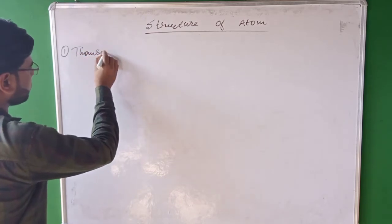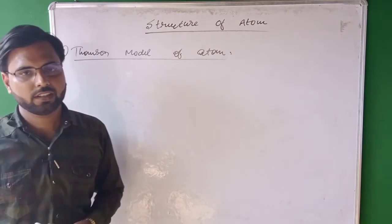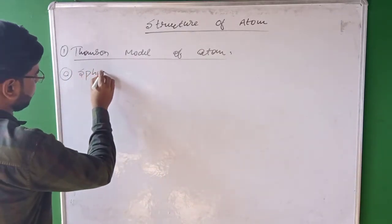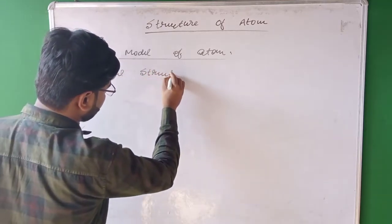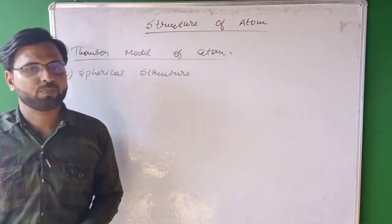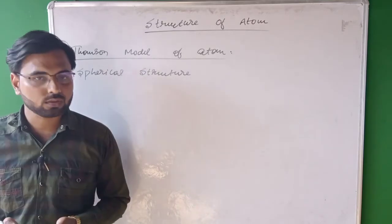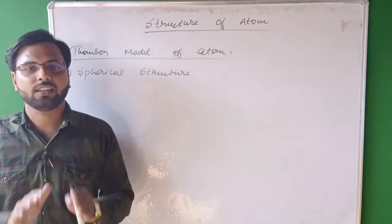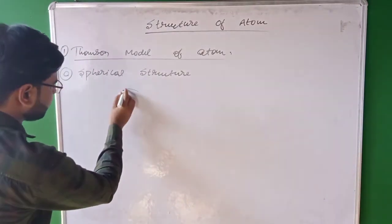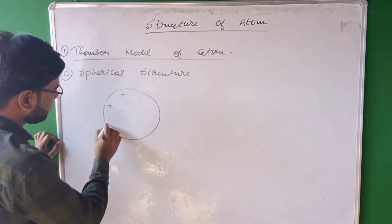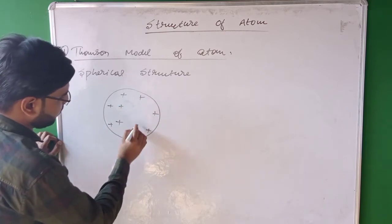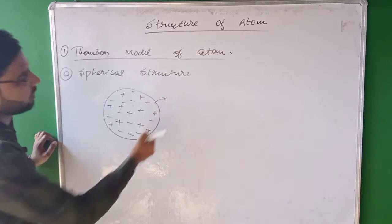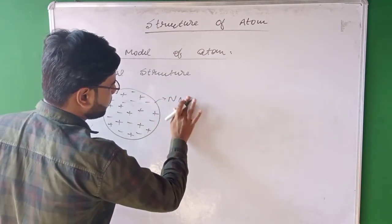Thomson proposed that atoms consist of a spherical structure. The positive charges are uniformly distributed throughout the sphere, and the negative charges are arranged in such a way that the positive and negative charges cancel out each other, and the atom is electrically neutral — meaning no net charge on the atom.